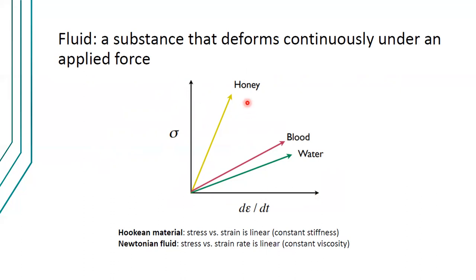Some examples of fluids are honey, blood, and water. We can see different slopes in what we call a rheogram — a plot between shear stress and the rate of shear (strain rate). The different slopes of these linear plots correspond to the different viscosities of these materials. In a stress-strain plot for solids, a linear relationship means constant stiffness, which corresponds to the modulus of elasticity. For fluids, we plot stress versus rate of strain, and that constant slope corresponds to viscosity.